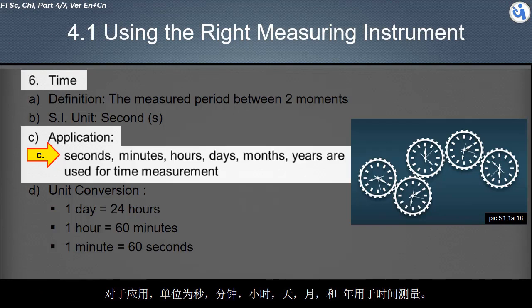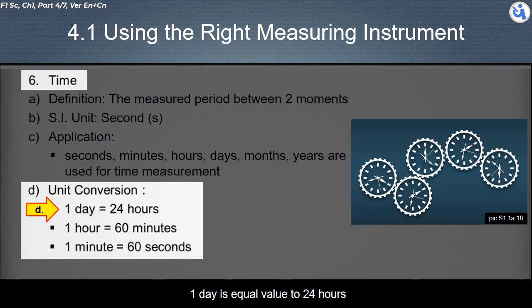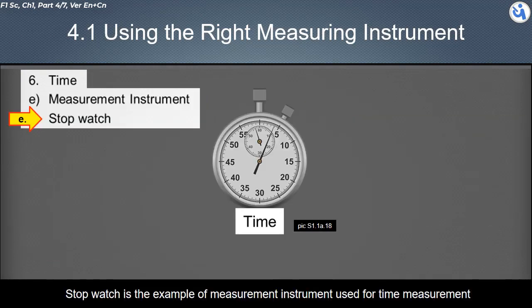This is about the unit conversion between the time units. One day is equal value to 24 hours. One hour is equal value to 60 minutes. One minute equal value to 60 seconds. Stopwatch is the example of measurement instrument used for time measurement.